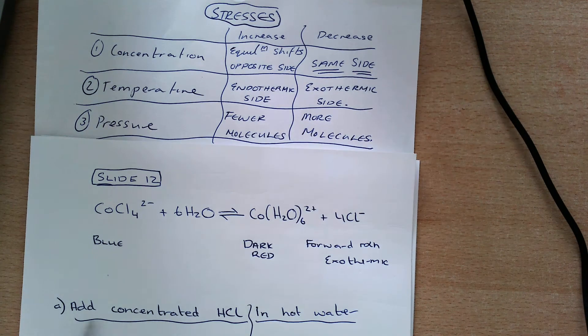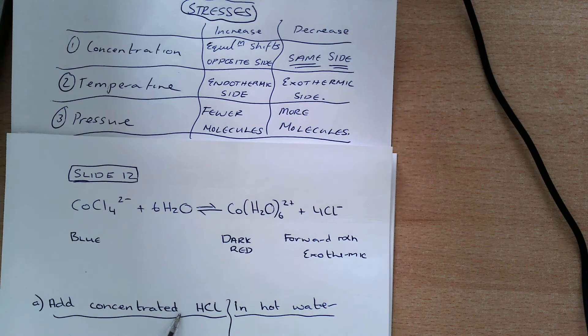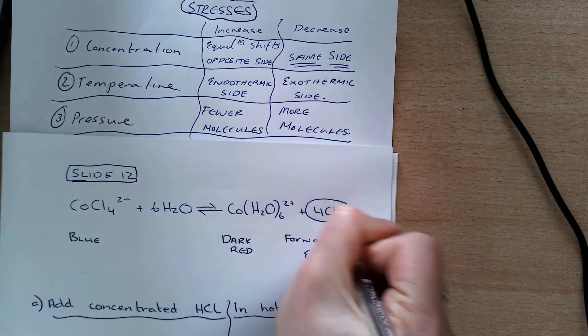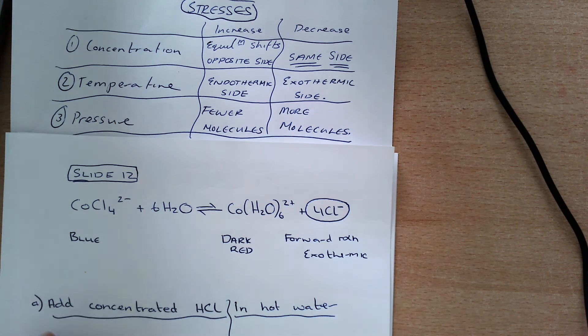So firstly here, if I look at adding concentrated HCl, the ion that that's going to affect is the Cl minus ion. So that's the first thing to realize—I'm increasing my Cl minus ion concentration.